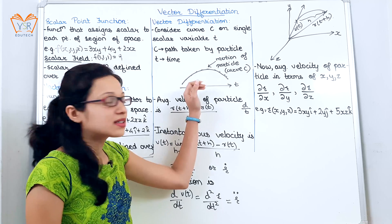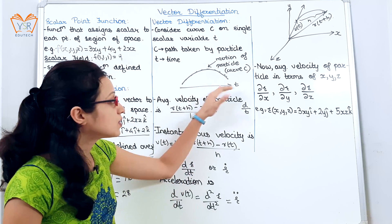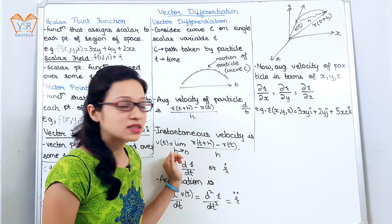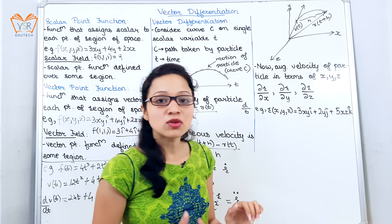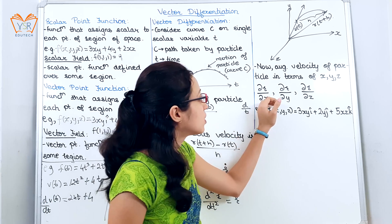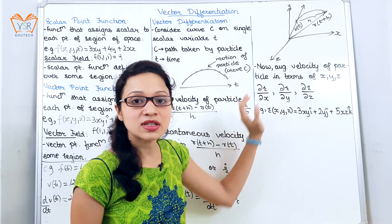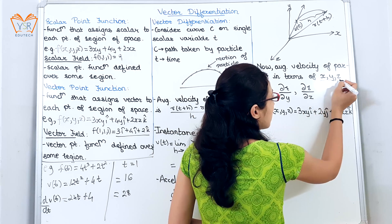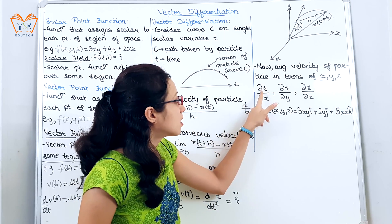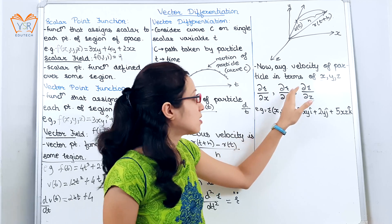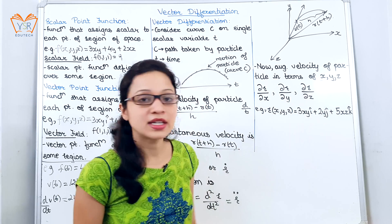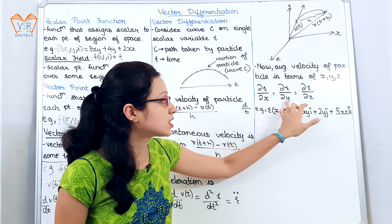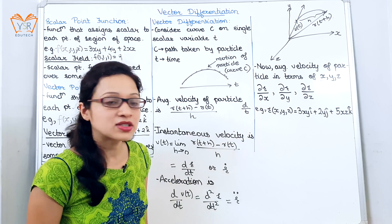Now if you see, we had considered this with respect to one variable. Suppose there are 3 variables — simple differentiation cannot be used. For that we move on to partial derivatives. In this case we consider the derivative of the position vector with respect to x, y, and z, giving us ∂r/∂x, ∂r/∂y, and ∂r/∂z. This is the partial derivative.